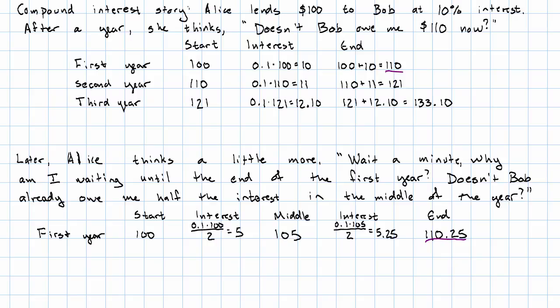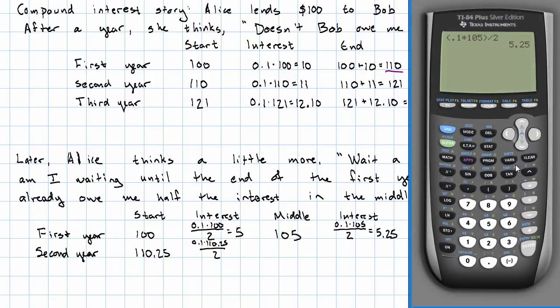Let's run through one more year of this. Right at the start, Bob owes Alice $110.25. And so the interest is going to be $0.1 times $110.25 over 2. I'm just going to leave that in my calculator.